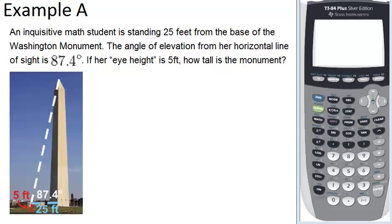In example A, an inquisitive math student is standing 25 feet from the base of the Washington Monument. The angle of elevation from her horizontal line of sight is 87.4 degrees. If her eye height is 5 feet, how tall is the monument?